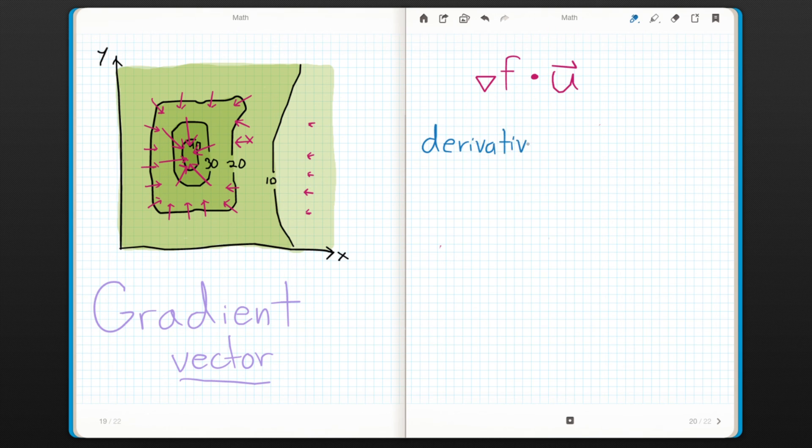What if you wanted to find the derivative of a function perpendicular to its gradient? Well then you do the gradient dotted with a vector perpendicular to it. And since any two perpendicular vectors dot product is 0, that means the derivative perpendicular to the gradient will always be 0.